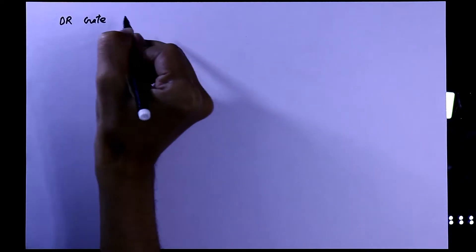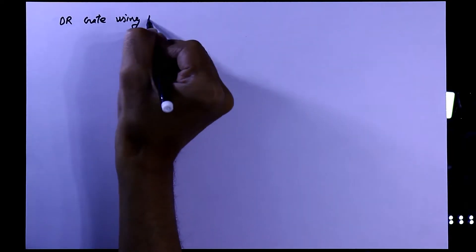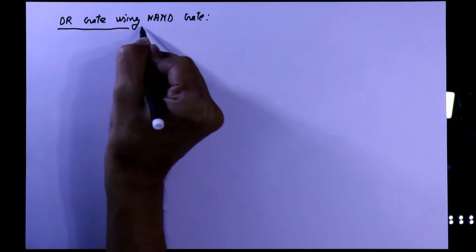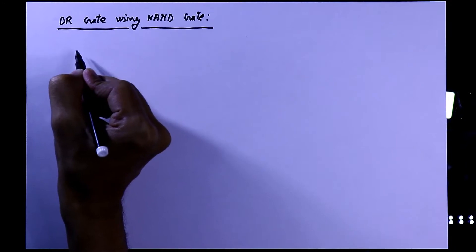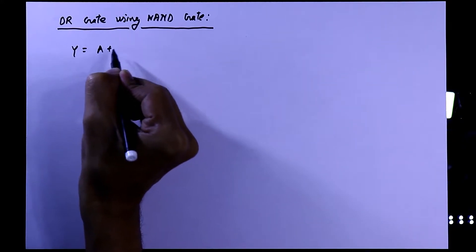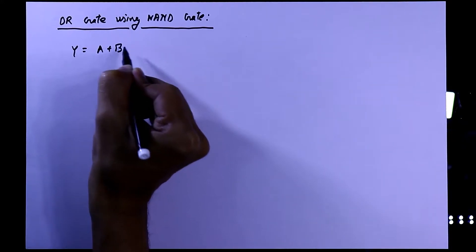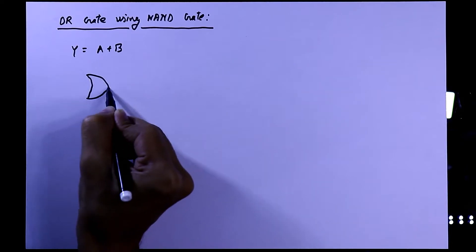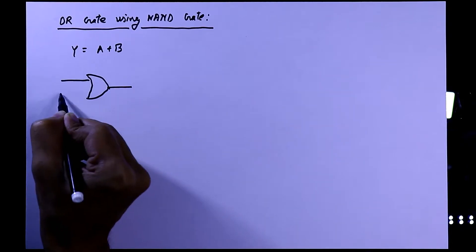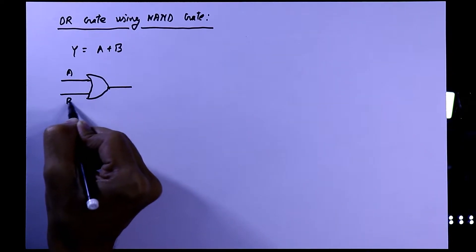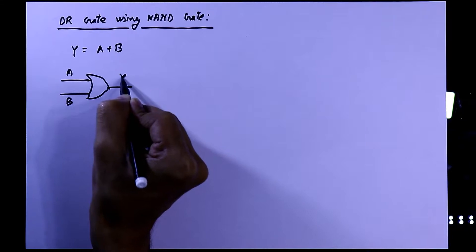In this video we are going to see how to make an OR gate using NAND gate. The mathematical expression of OR gate is y = a + b. Here it is a two input OR gate, where a and b are the two inputs and y is the output.